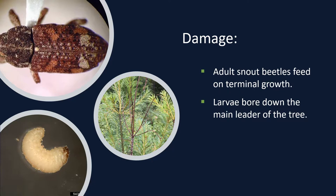This happens usually between June to August. The larval stage, which lives beneath the bark, is white with a distinct brown head. When mature, it reaches approximately 7 millimeters in length, is legless, and has a slightly C-shaped appearance. Both the larvae and the adult are responsible for the damage. The adult feeds on terminal growth causing damage, and the larvae bore down the main leader of the tree.